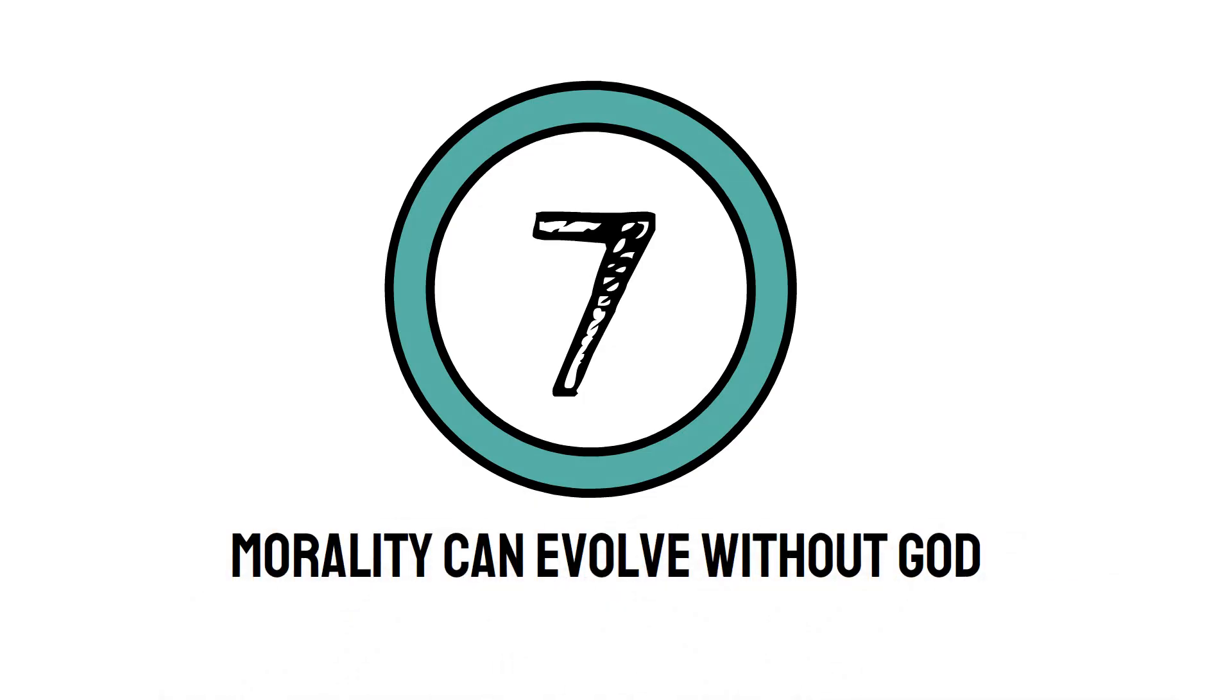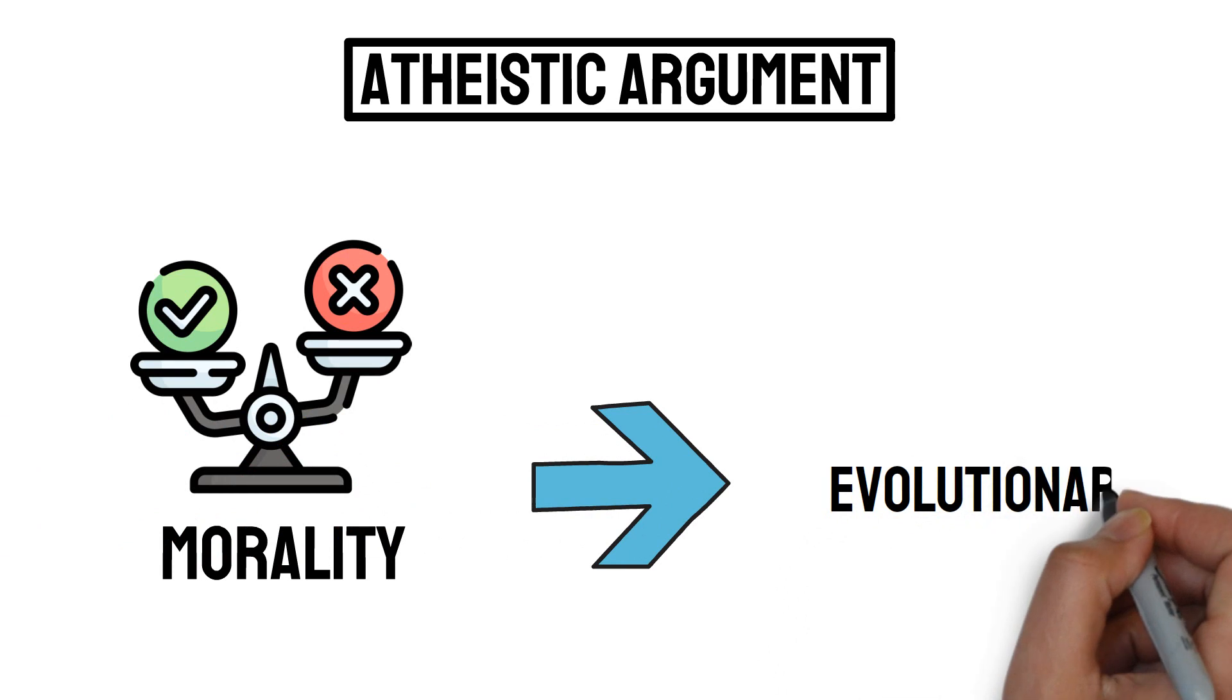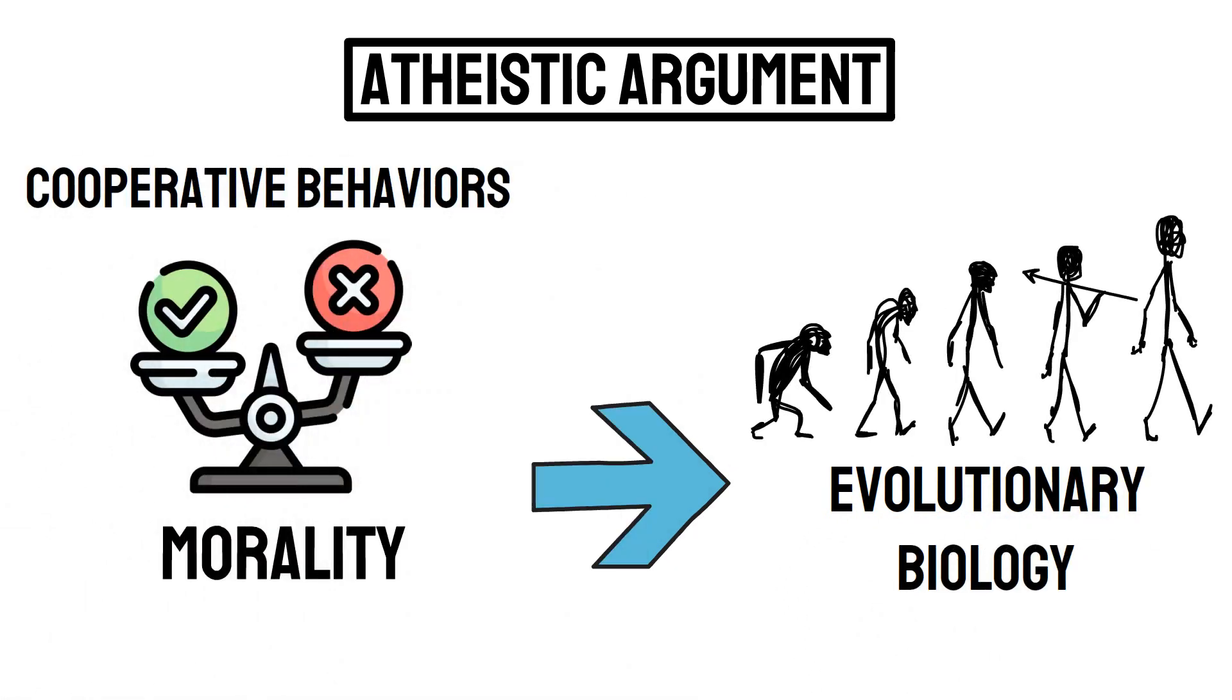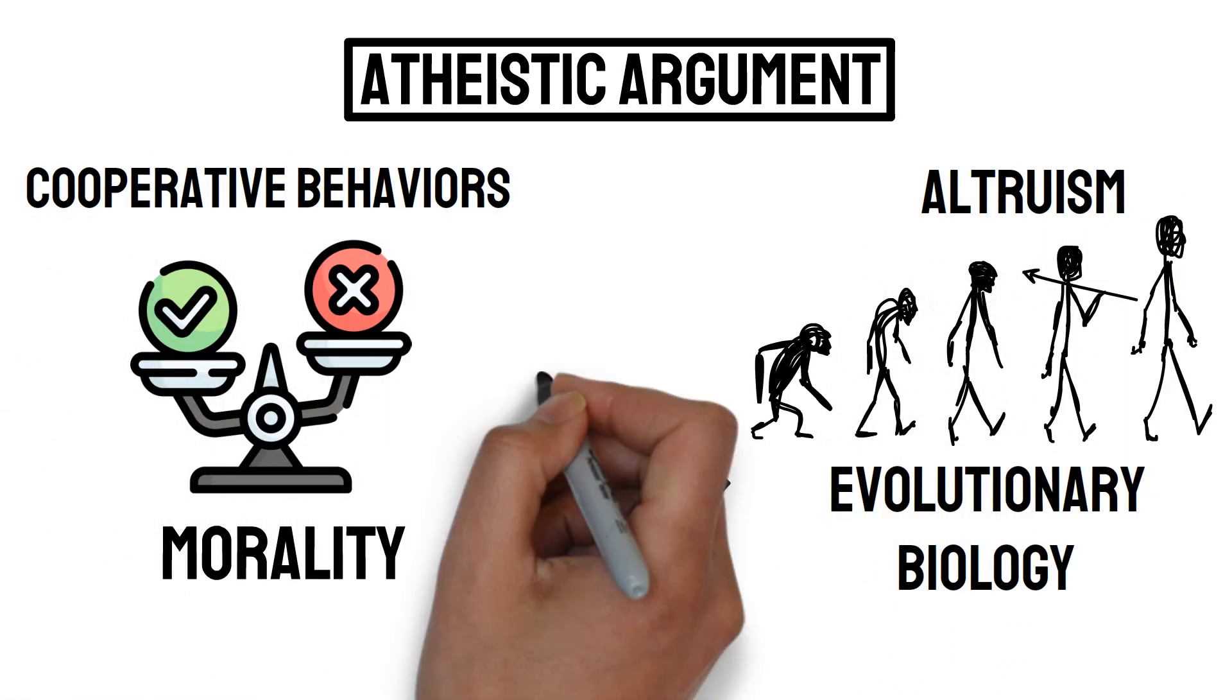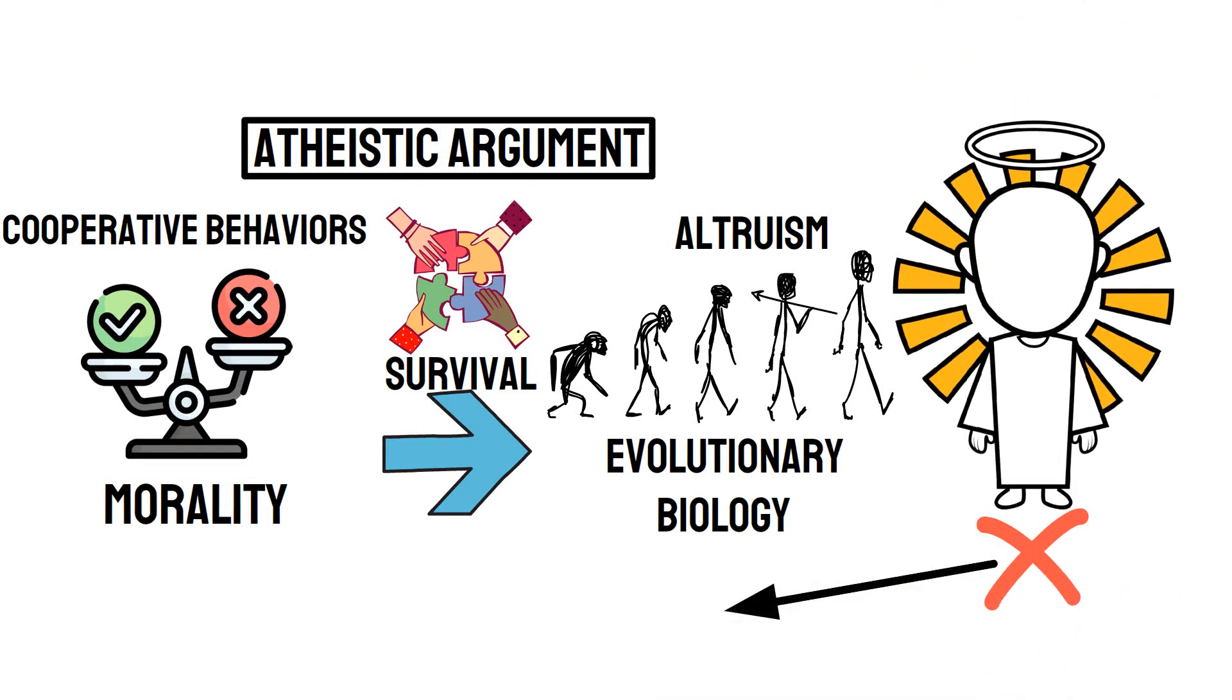Number seven, morality can evolve without God. The argument goes, morality can be explained through evolutionary biology. Cooperative behaviors and altruism may have evolved because they promote survival within a group. So, this negates the need for a divine lawgiver to explain human ethics.